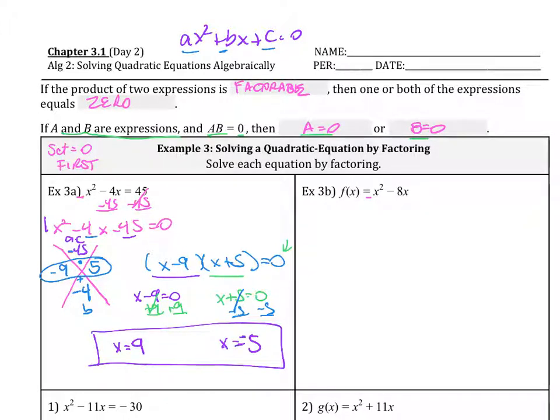I know some of you can do this without having to do the zero product property step. You just know that it's the opposite sign. However, I do need to see the factored form here. You can't just come from these factors and write the answers. You need to write the factors in first, and then write the answers of x equals, x equals.